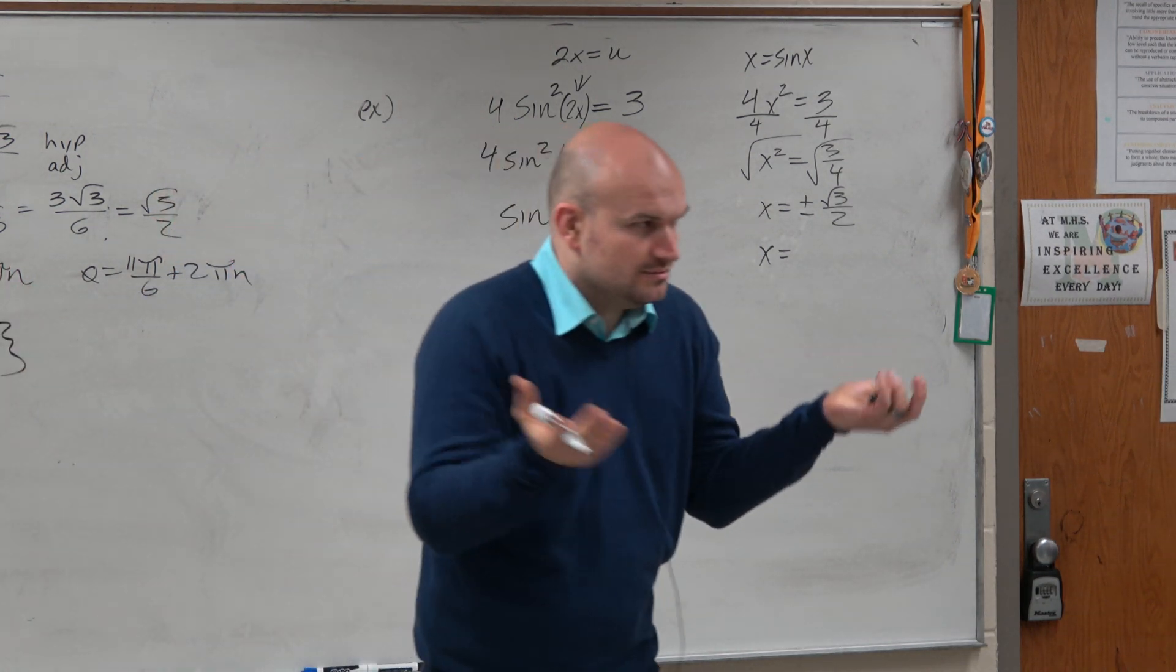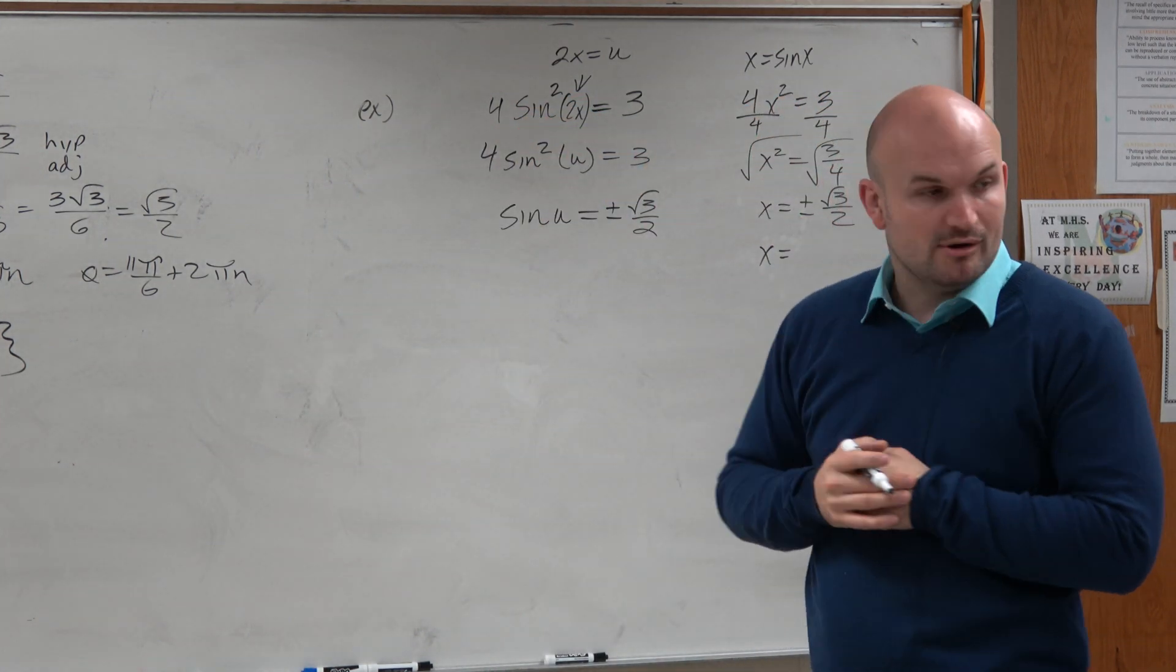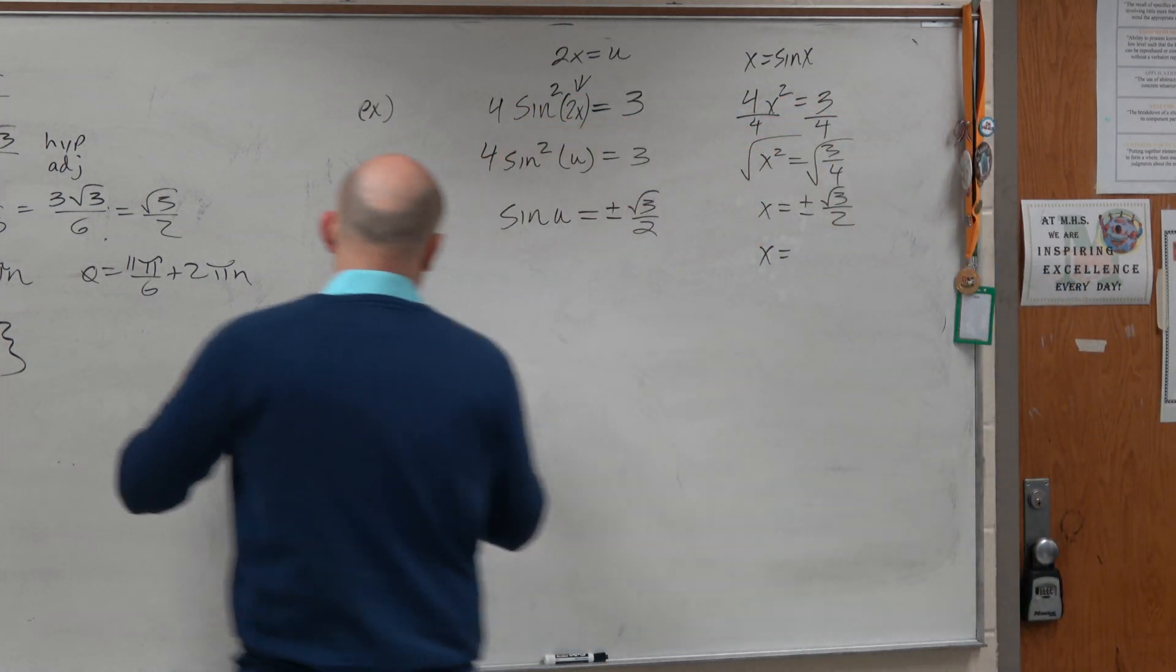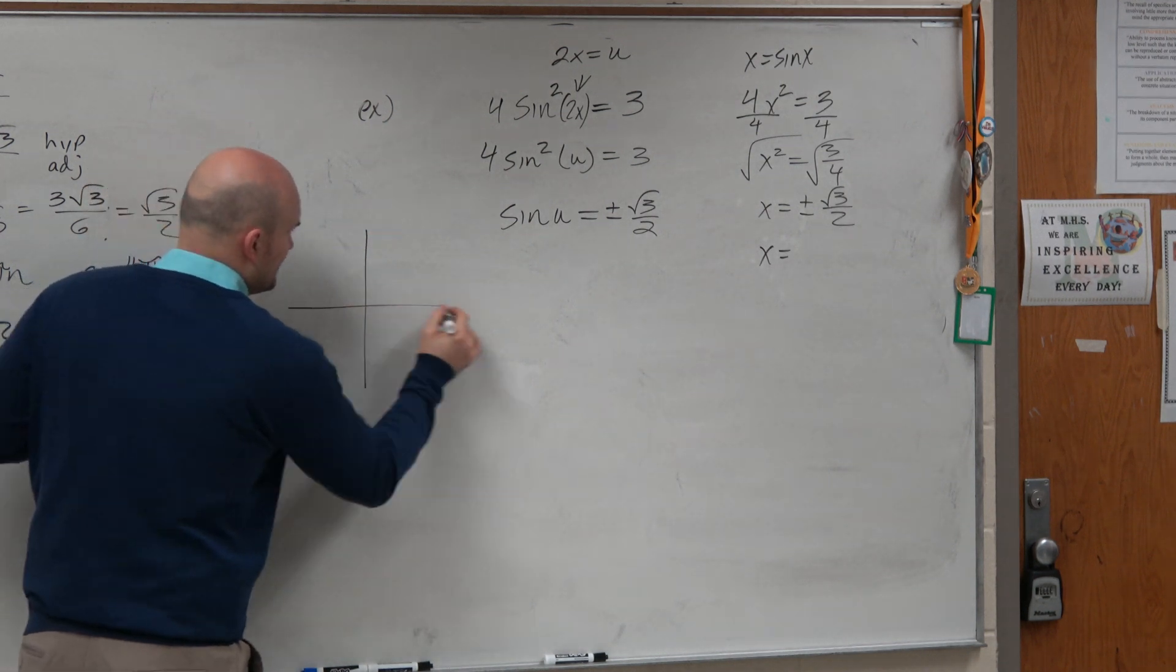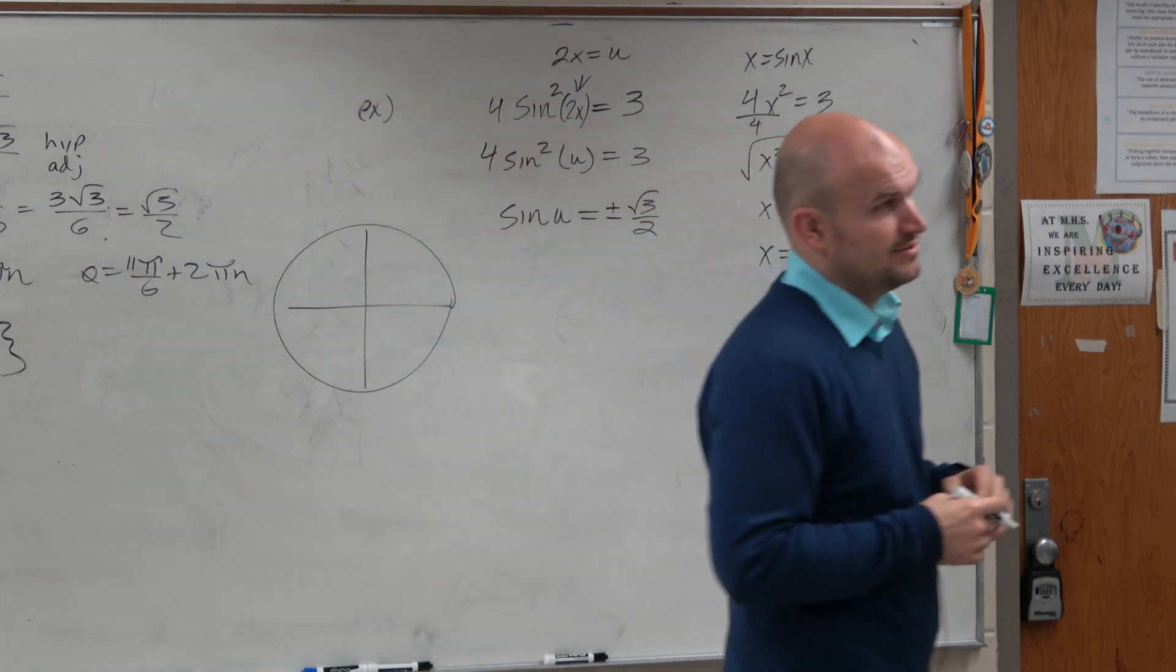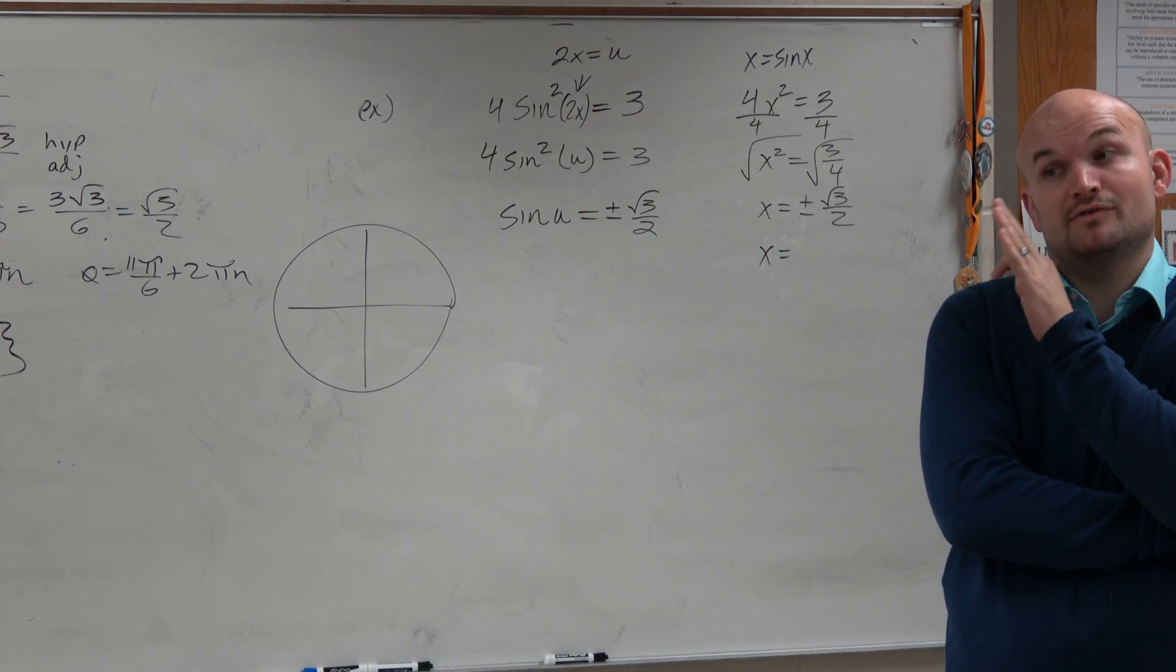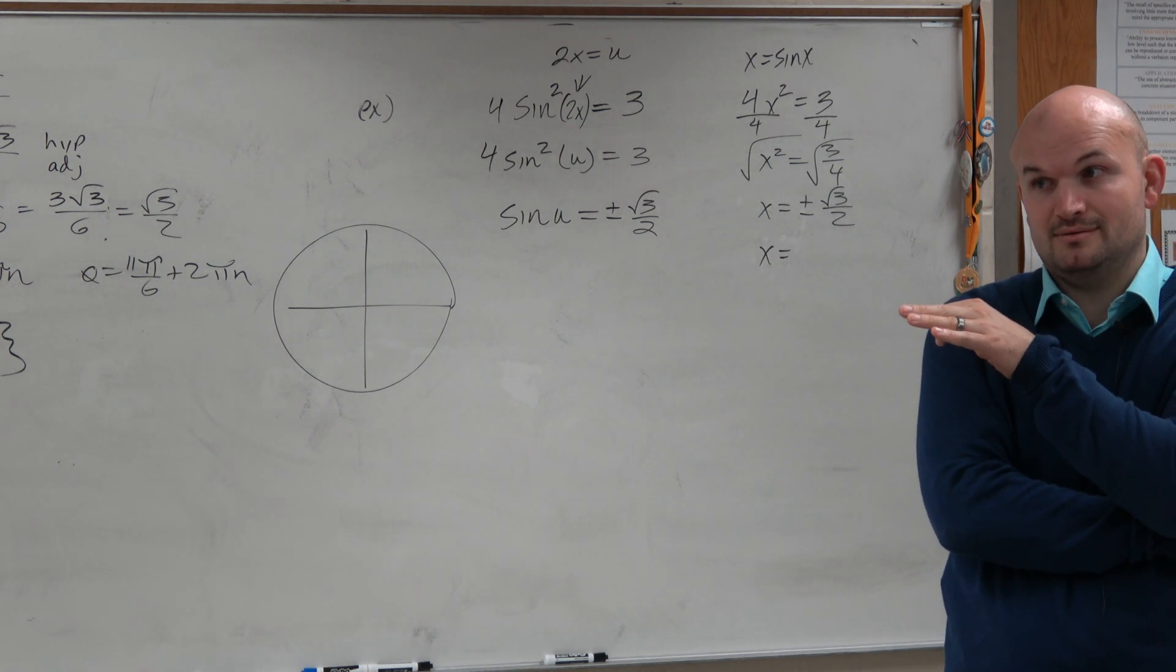Now, again, u just representing any angle, right? I mean, you can use theta if you want to, if you feel more comfortable with it. But again, going back to our unit circle, for what angles is the sine square root of 3 over 2? Plus or minus? So we think square root of 3 over 2, that's going to be π over 3. Right? Good catch.